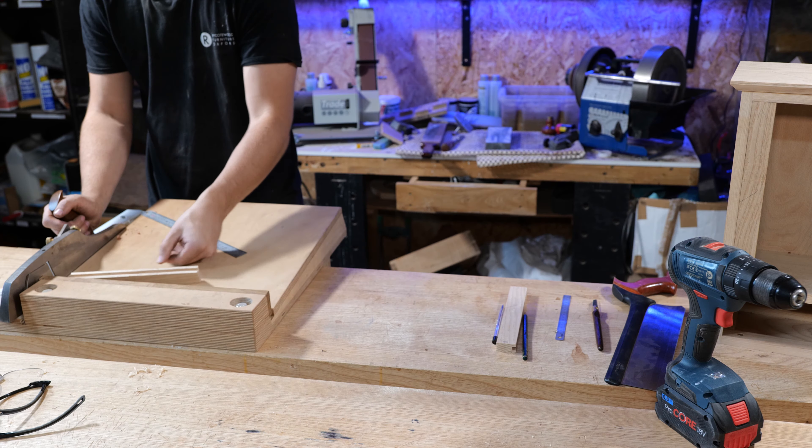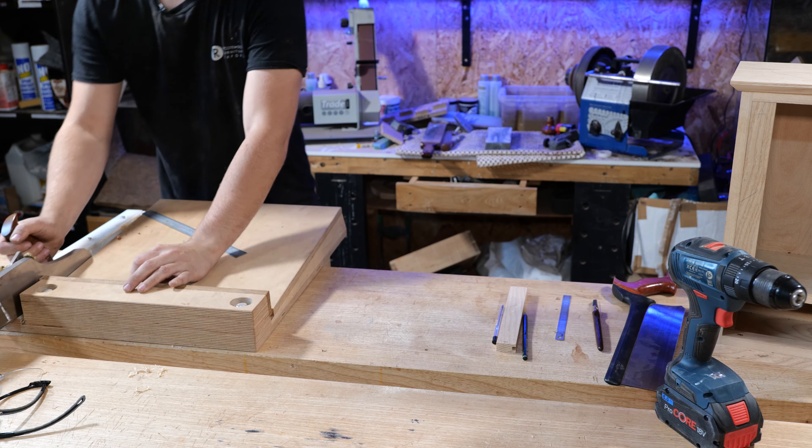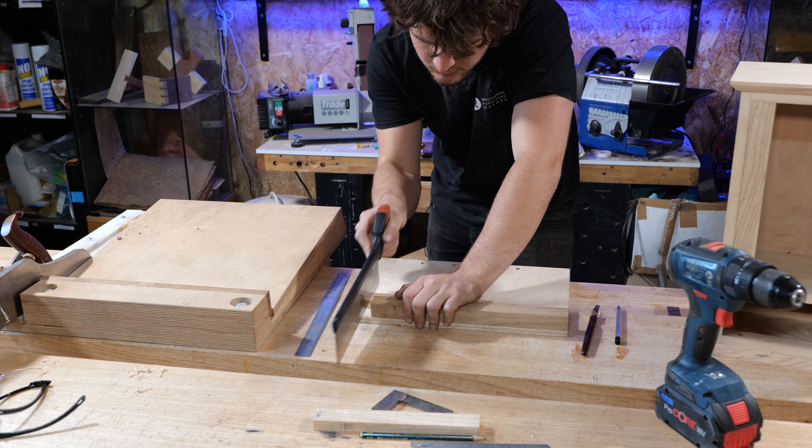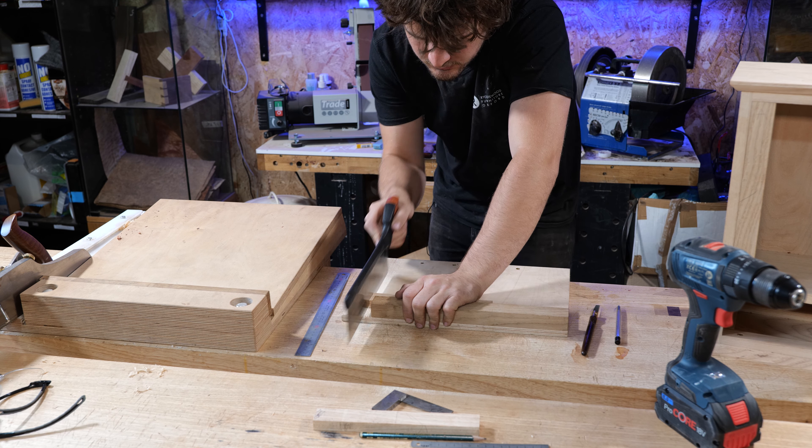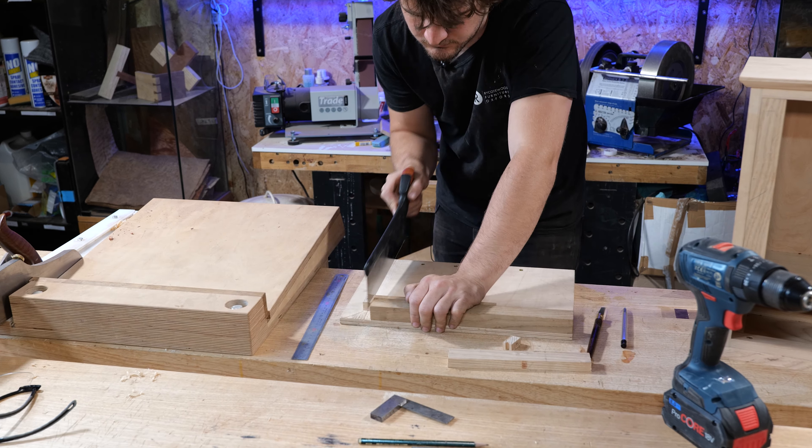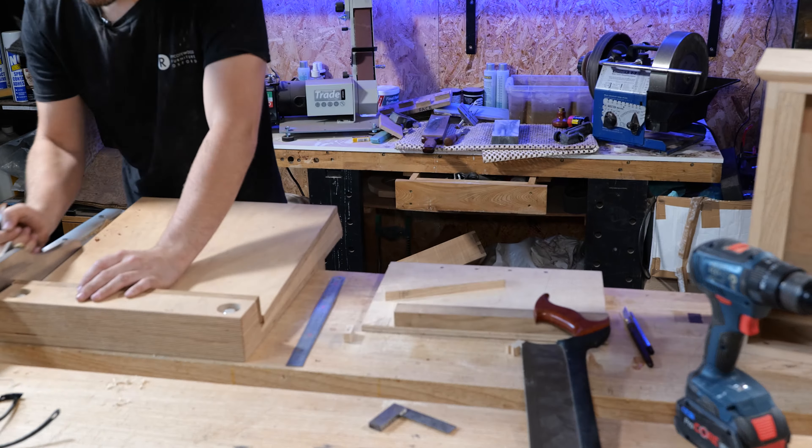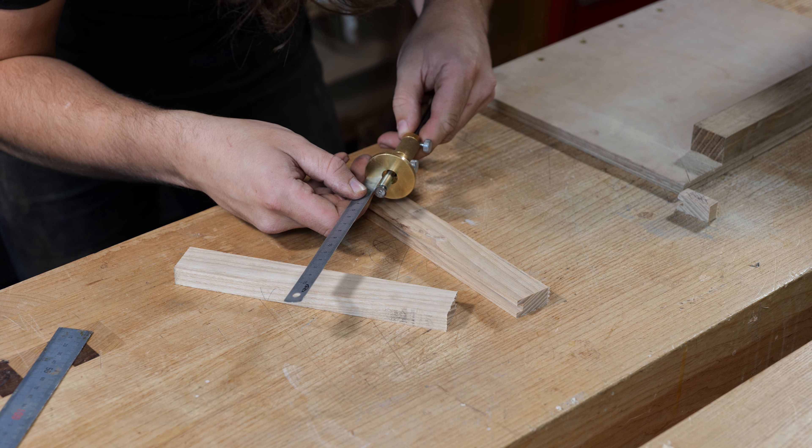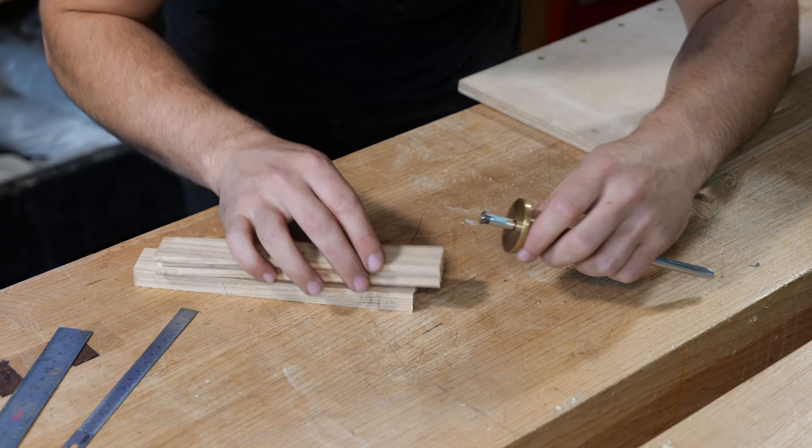Next we'll set a marking gauge to 24 millimeters, the overall length of the tenon, and we'll scratch it around all four sides, both ends of both components.